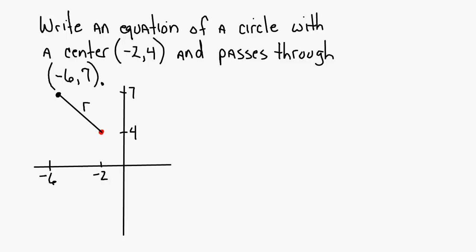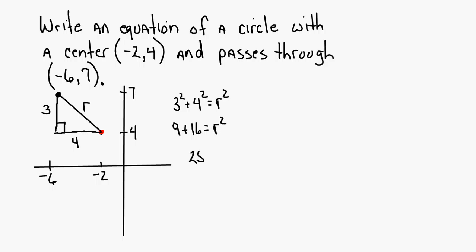The book says to use the distance formula to find the radius, but it's easier to turn this into a right triangle and use the Pythagorean theorem. The vertical leg of this right triangle would be 3, and the horizontal leg would be 4. So 3 squared plus 4 squared equals R squared: 9 plus 16 equals R squared, 25 equals R squared, so 5 equals R. The radius is equal to 5.